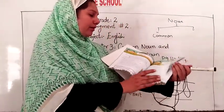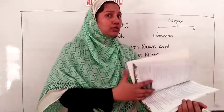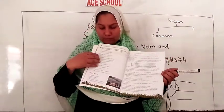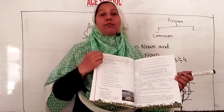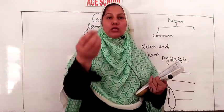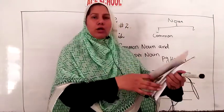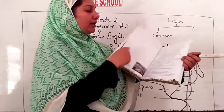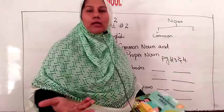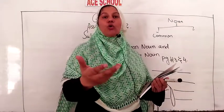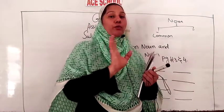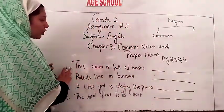Here is the exercise. In number A, it says: write down 12 common nouns in your exercise book. You can find common nouns from this book — there are so many here. Or if you can write them by your own, you can do that. You have to make a list of 12 common nouns in your notebook.